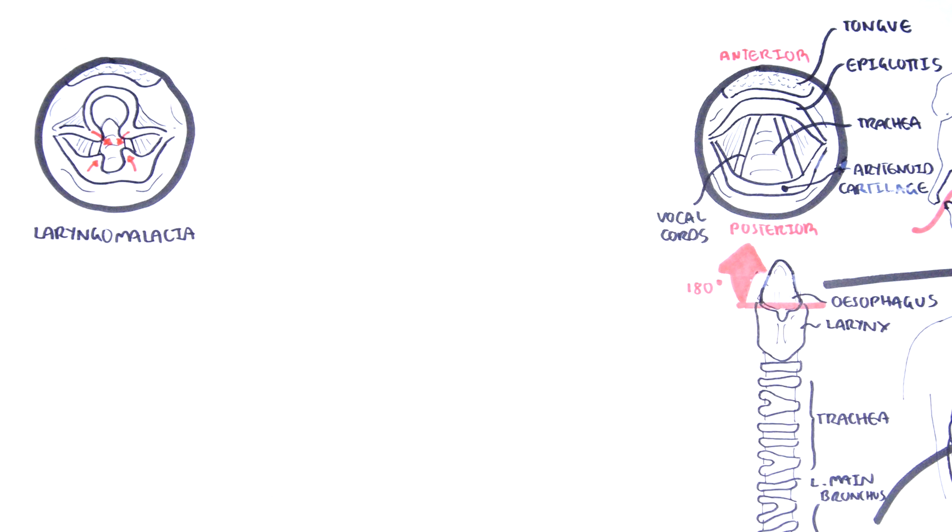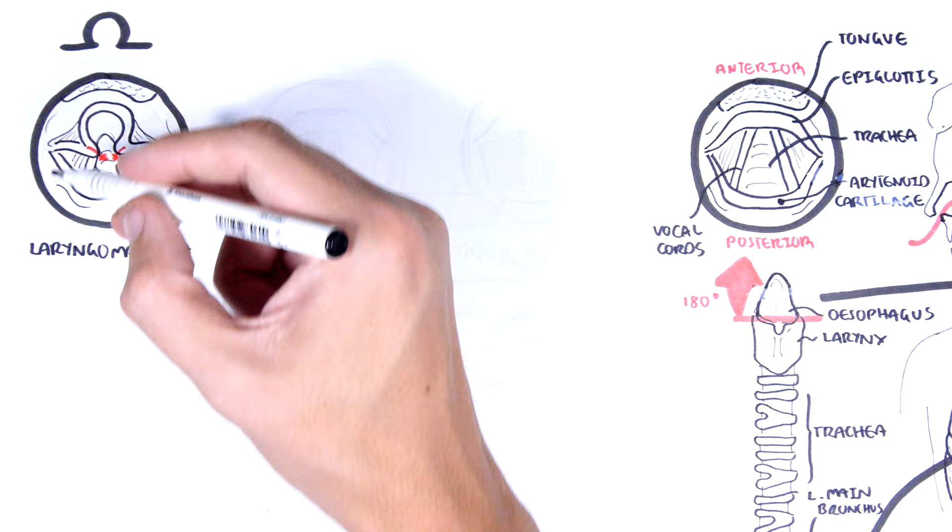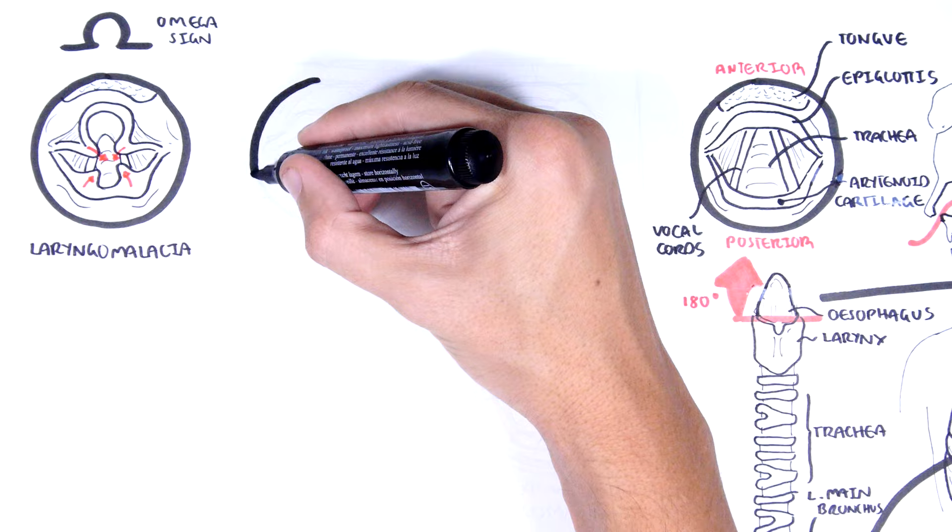The airway is partially obstructed during inspiration by the prolapse of the flaccid structures. The inspiratory stridor is usually worse when the child is in a supine position, when crying or agitated. When looking at the larynx in laryngomalacia, there is a characteristic omega sign of the epiglottis, and this is seen during inspiration.